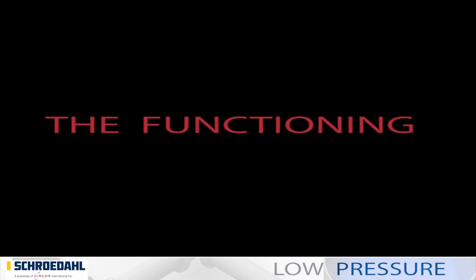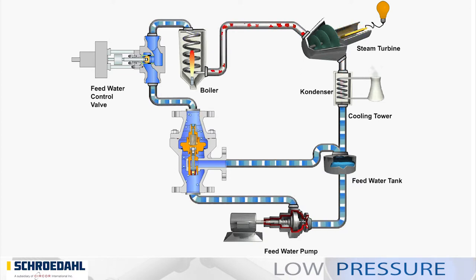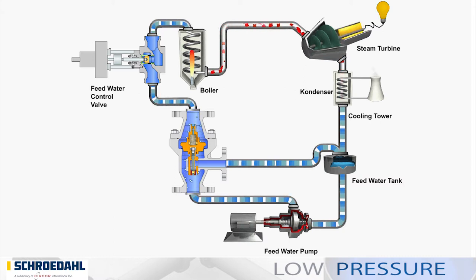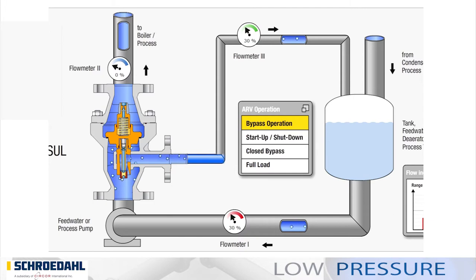How the automatic pump protection for centrifugal pumps works using our SUL valve as an example. The flow animation shows the bypass system circuit in a Schroedahl valve. The medium, which is mostly feed water but can also be individual process media, is fed to the pump. This conveys the medium through the Schroedahl fitting and a downstream valve to the turbine or to an alternative process. A bypass branches off from the Schroedahl fitting and connects the pump directly to the tank.